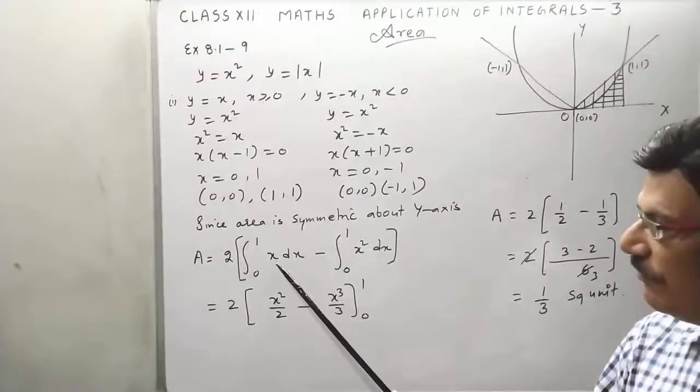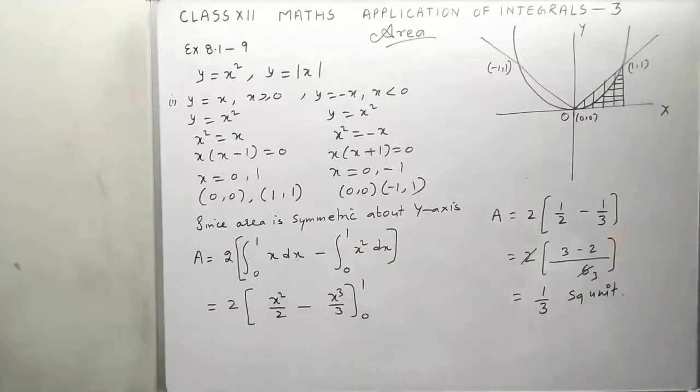0 to 1 x square dx. This is parabola, area of horizontal line. This is area of vertical line, this is area of horizontal line. Now just integrate: this x square upon 2 and this x cube upon 3, and you can apply limits.